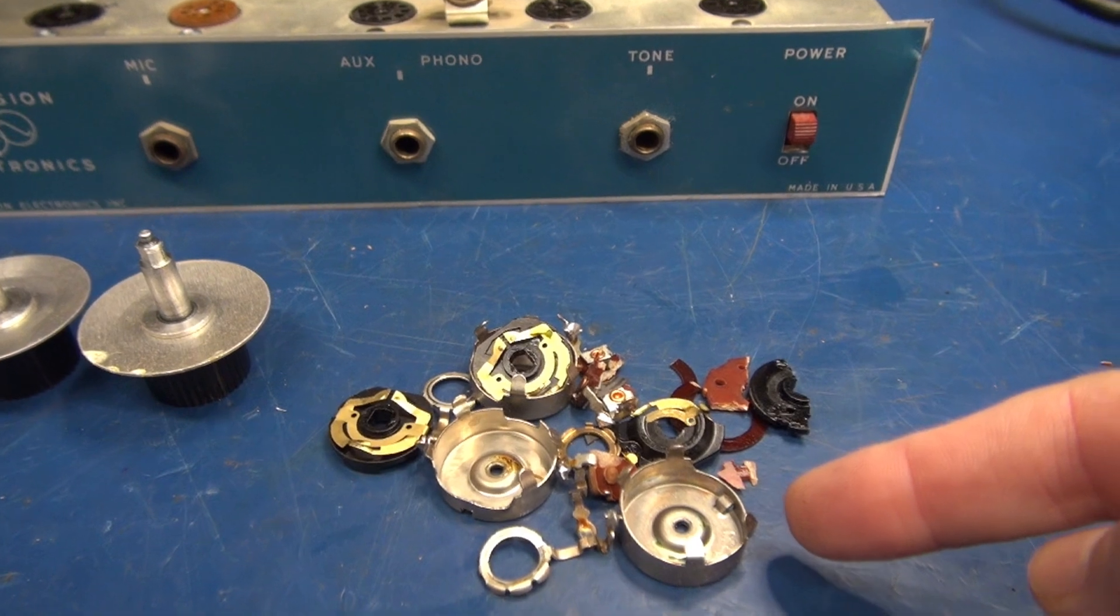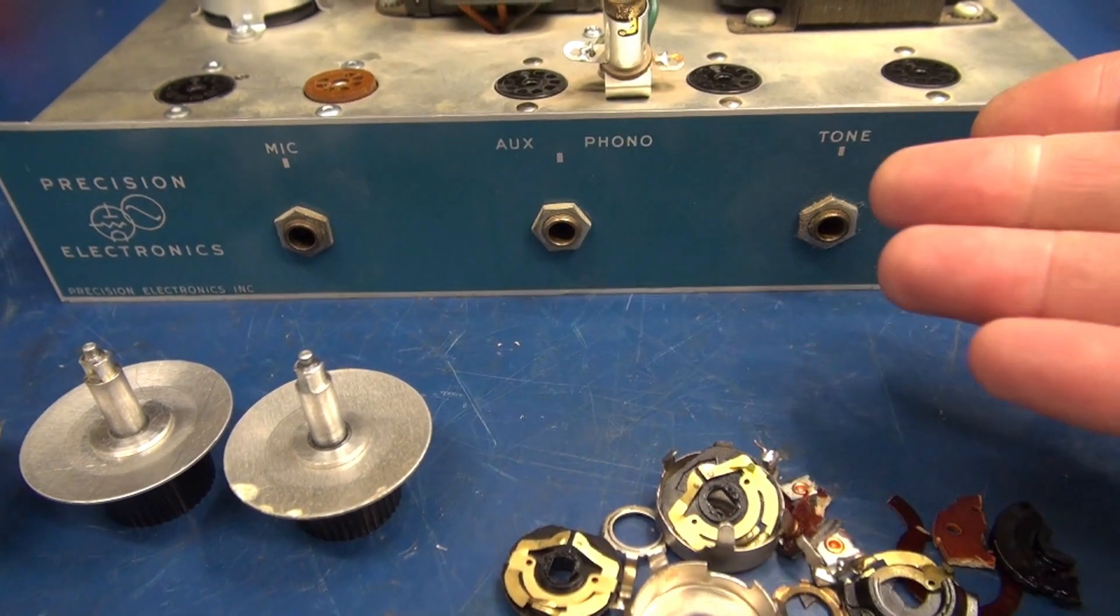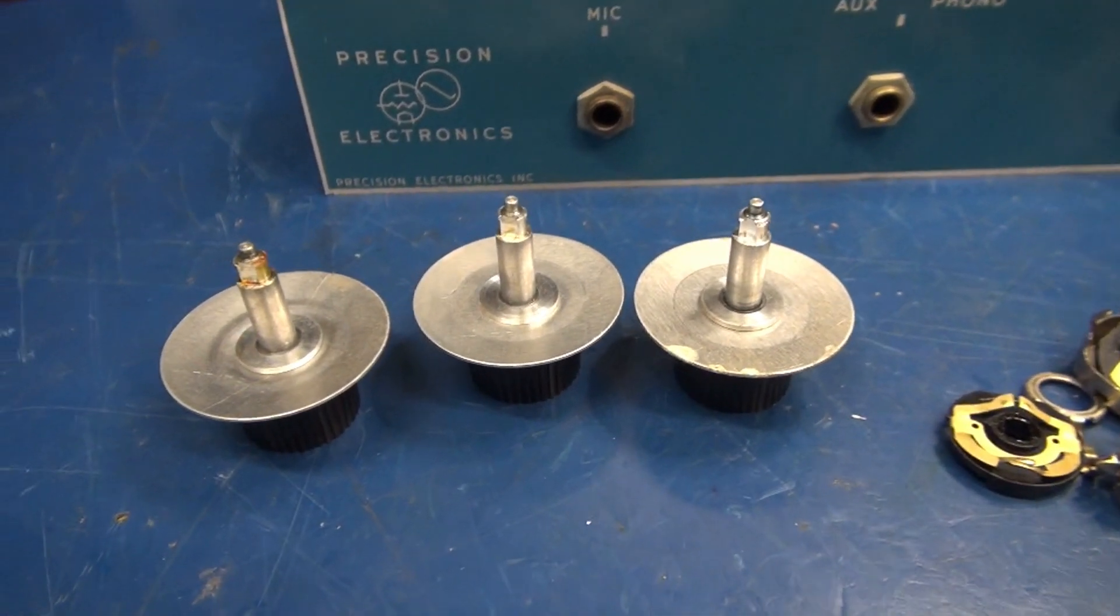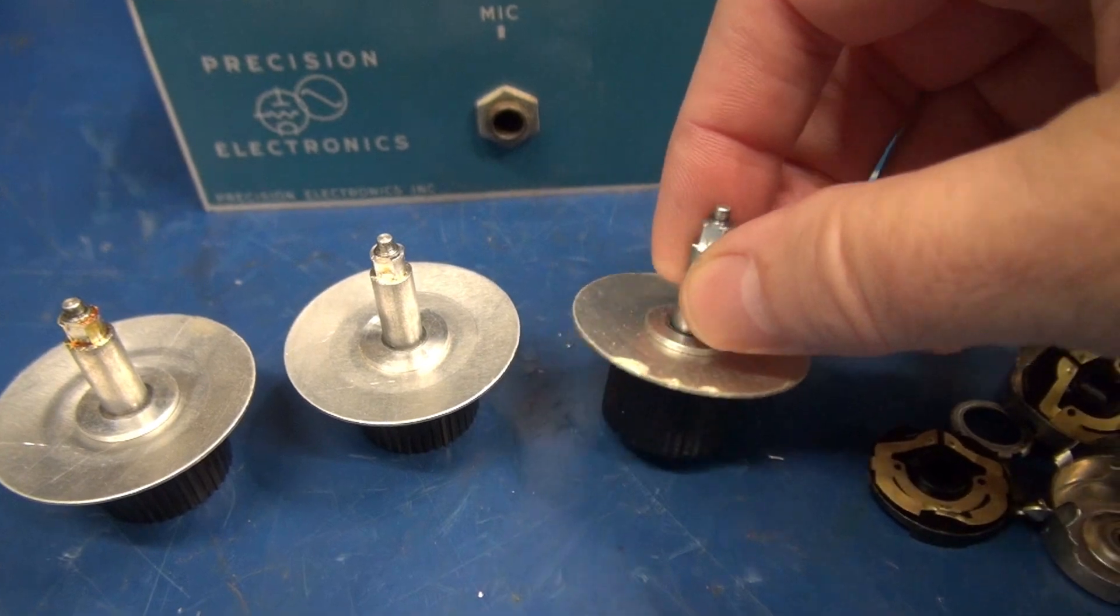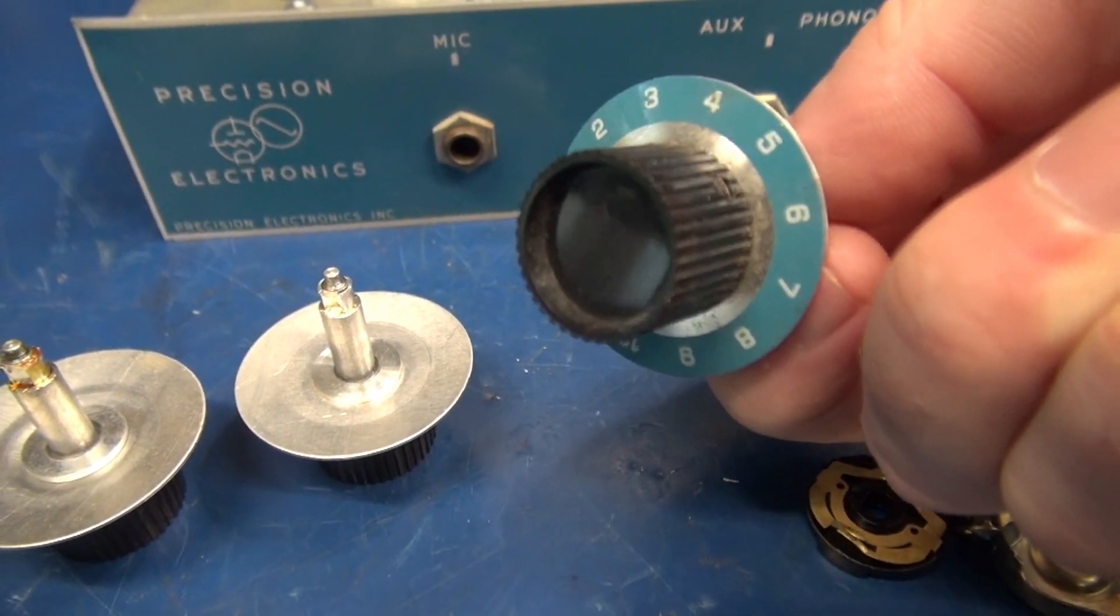All right, well, there's what's left of the pots. Now I can gain access to the nuts, retract the rest of the housing, and put in my new pots. Next task will be to try to remove these shafts and reuse those classic knobs.